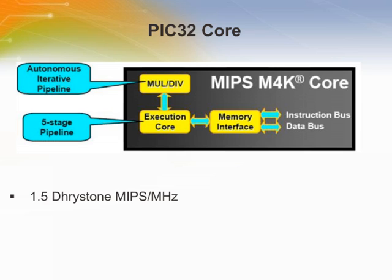MIPS Technologies rates its M4K core at 1.5 Dhrystone MIPS per MHz. As with any other microcontroller with slow flash memory, when running faster than the flash speed, the Dhrystone rating would drop. However, in the case of PIC32, the on-chip pre-fetch cache and high-speed SRAM minimize that performance drop.